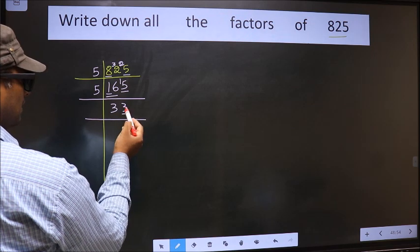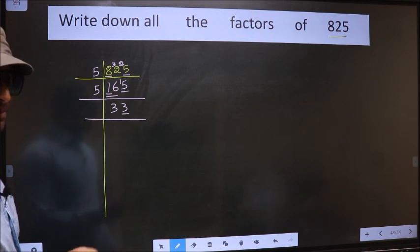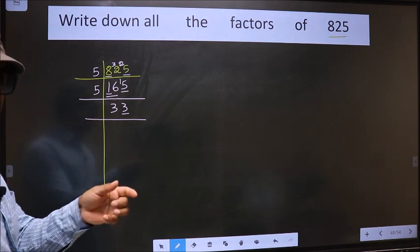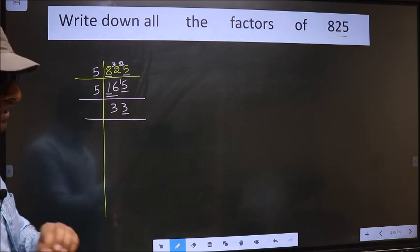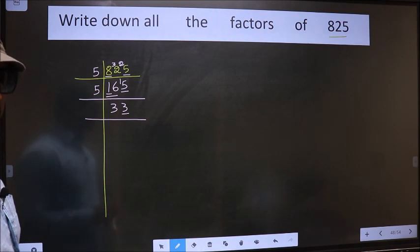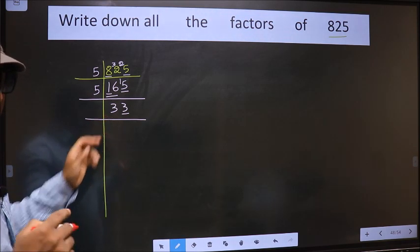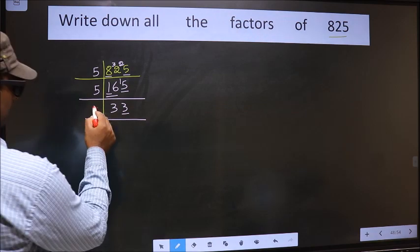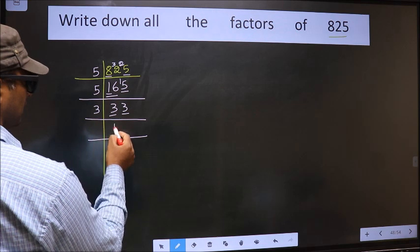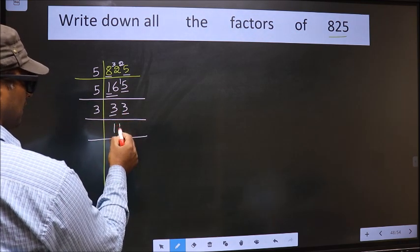Now here last digit 3 is not even, so this number is not divisible by 2. Next prime number is 3. To check divisibility by 3, for that we should add the digits. That is 3 plus 3, 6. Is 6 divisible by 3? Yes. So this number also divisible by 3. So we take 3 here. First number 3, when do we get 3 in the 3 table? 3 once 3. The other number 3, when do we get 3 in the 3 table? 3 once 3.